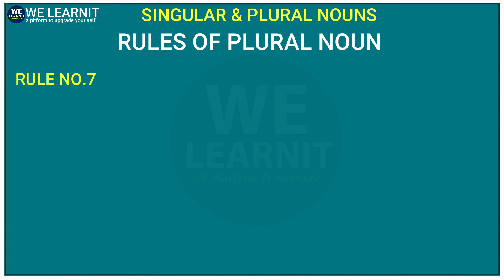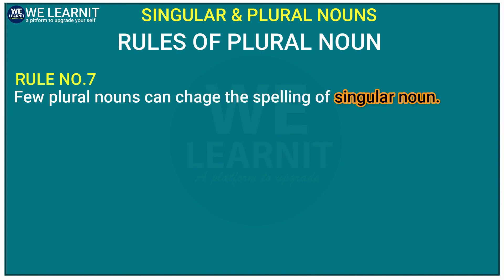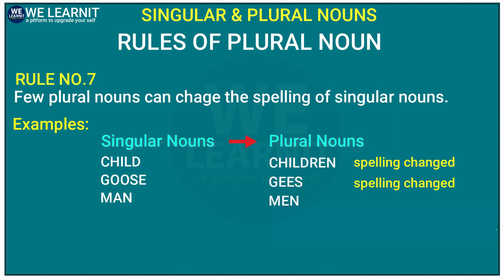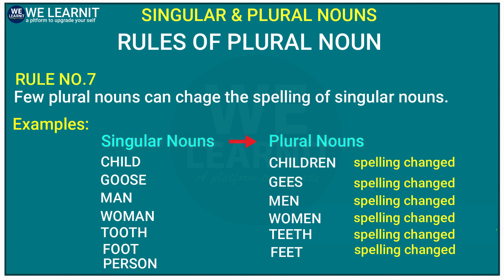Now, let's look at the seventh rule of plural nouns. Some plural nouns completely change the spelling of the singular noun. For example, 'child' becomes 'children', 'goose' becomes 'geese', 'man' becomes 'men', 'woman' becomes 'women', 'tooth' becomes 'teeth', 'foot' becomes 'feet', and 'person' becomes 'people'. So, like this, a few plural nouns change the spelling of the singular noun.